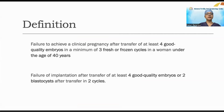A few years ago, failure to achieve a clinical pregnancy after transfer of at least four good quality embryos in a minimum of three fresh or frozen cycles in a woman under the age of 40 was considered recurrent implantation failure. So broadly speaking, about three cycles with no result would be called recurrent implantation failure.